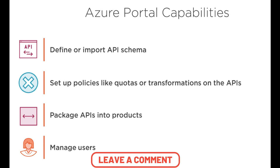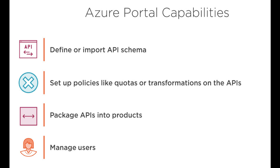For Azure Portal capabilities: it can define or import an API schema. It can also set up policies like quotas and transform the API content, such as XML to JSON or JSON to XML — many policies are available. You can set up the policies as needed. It can also package APIs into products, manage users, and much more.